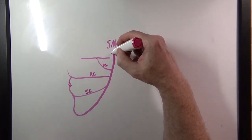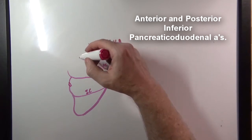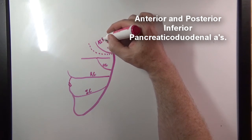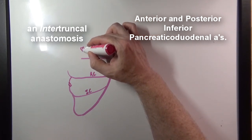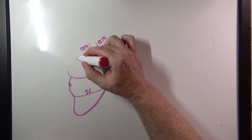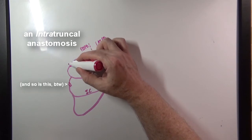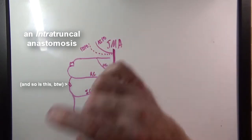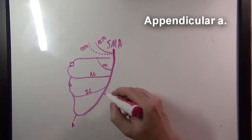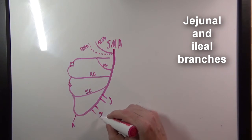From the superior mesenteric artery we also have the inferior pancreaticoduodenal arteries — an anterior and a posterior, where the dotted line represents posterior. These anastomose with their superior pancreaticoduodenal counterparts. The middle colic and right colic arteries contribute to the marginal artery that runs around the inside of the colon. We also have the appendicular artery, and the jejunal and ileal branches which supply blood to the small intestines.